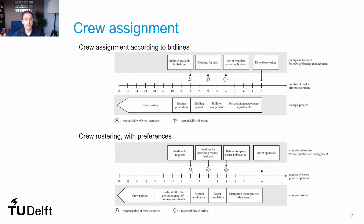Here is a timeline comparison of the bid lines and the rostering approach followed by most American and European airlines respectively. A typical sequence for an American airline involves the generation of bid lines by the airline up to two months before operations. Then the crew has about two to three weeks to submit their bids, and one month before operations the airline publishes the allocation of lines to each crew member. In the rostering process, crews start the process by communicating their preferences and requests up to six or eight months before operations. Then the airline processes all these requests, communicates which ones are accepted, and produces the roster, ready once more one month before operations.